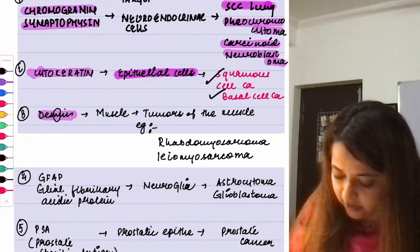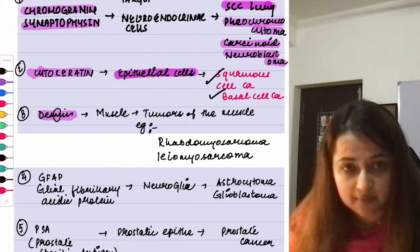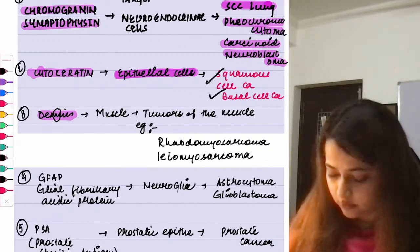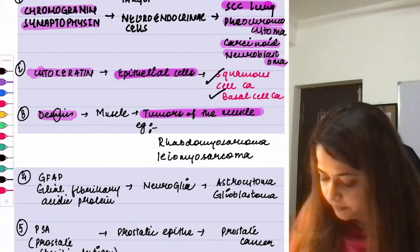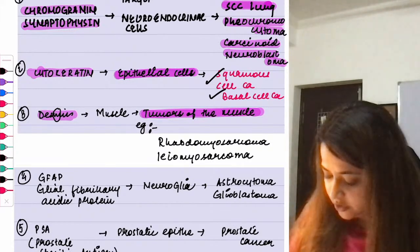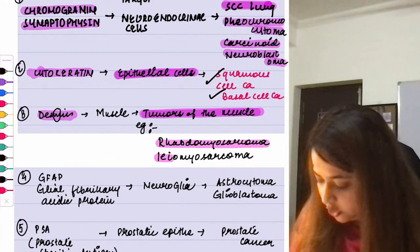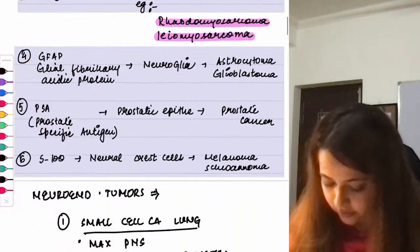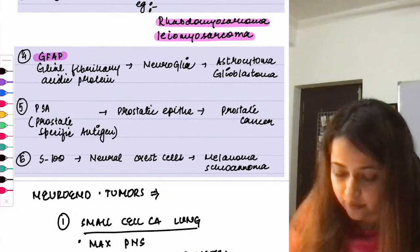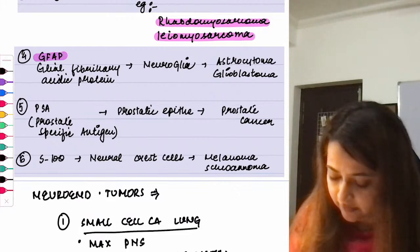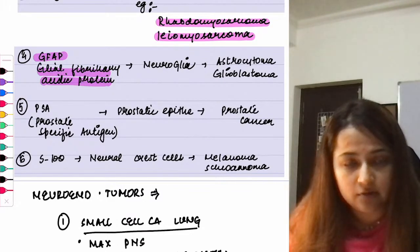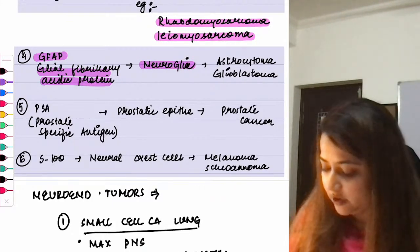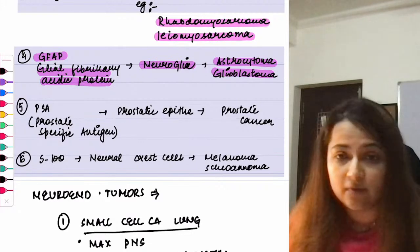Desmin has 'M' in it — it marks tumors of muscle origin. Tumors such as rhabdomyosarcoma and leiomyosarcoma will be desmin positive. GFAP (glial fibrillary acidic protein) indicates neuroglial origin. Tumors such as astrocytoma and glioblastoma are GFAP positive.